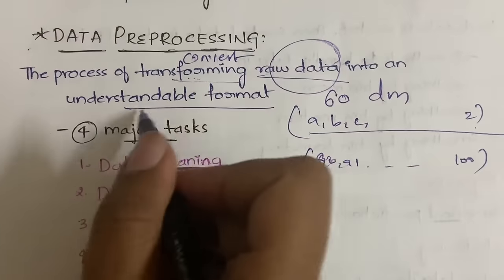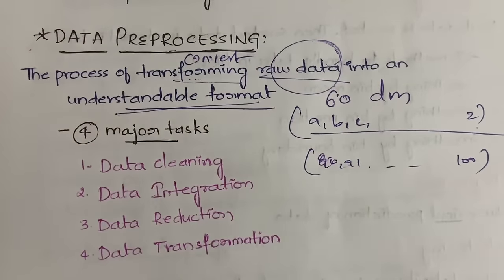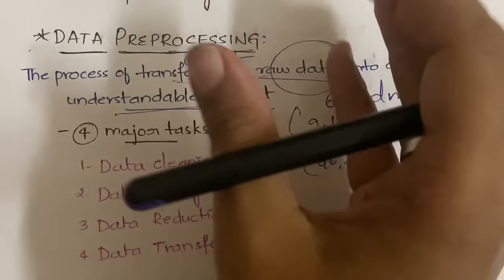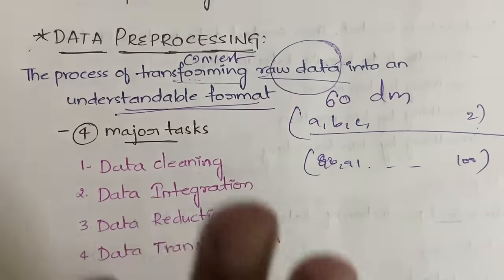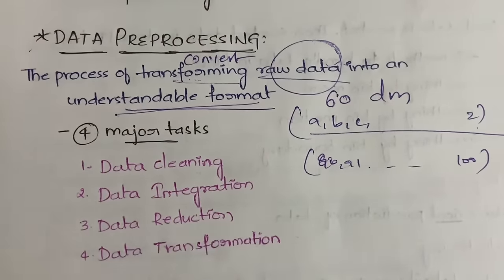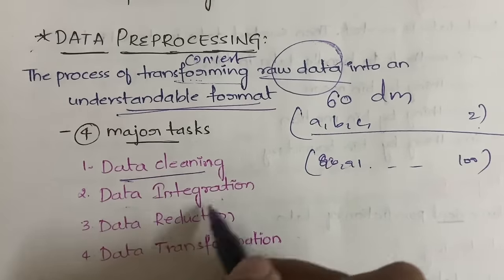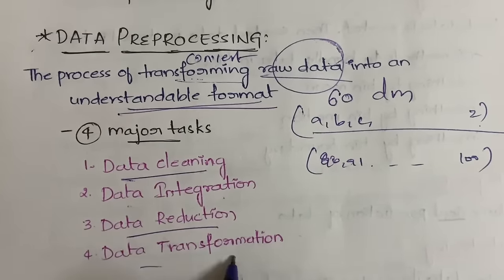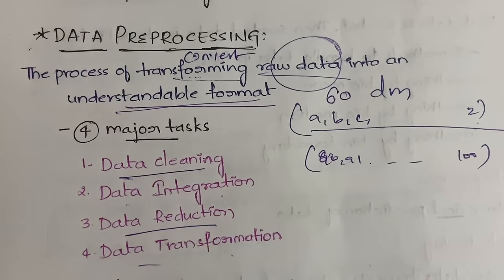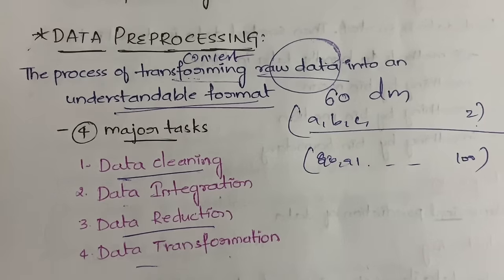An understandable format means organizing the data into a table, chart, or graph so it can be clearly understood. The process of converting raw data into such a format is called data pre-processing. In data pre-processing we have four steps: data cleaning, data integration, data reduction, and data transformation.